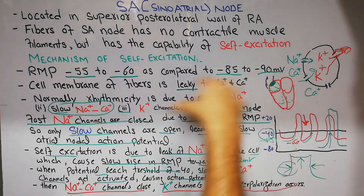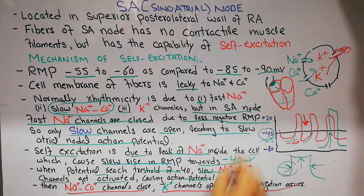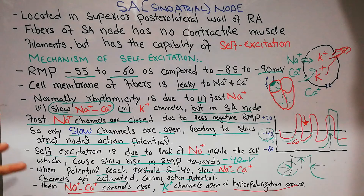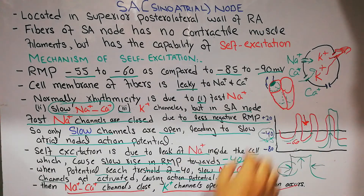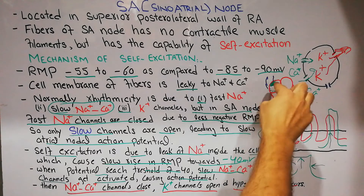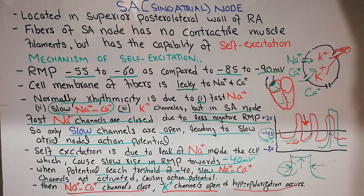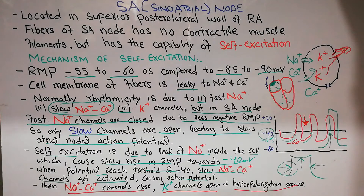Due to this sinoatrial activity, the electrical discharge spreads to the atrial muscle. When the atrial muscles contract, blood is pumped into the ventricles. After a delay, the charge reaches the AV node where it is delayed further, then spreads to the ventricles. The ventricles get excited, contract, and blood moves out — completing the pumping action.